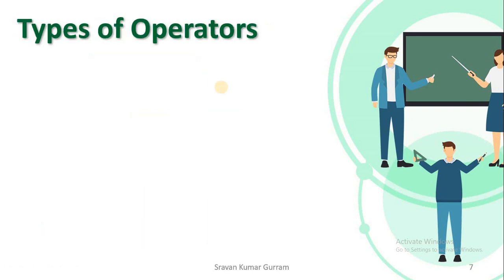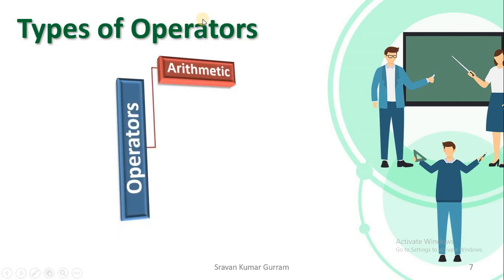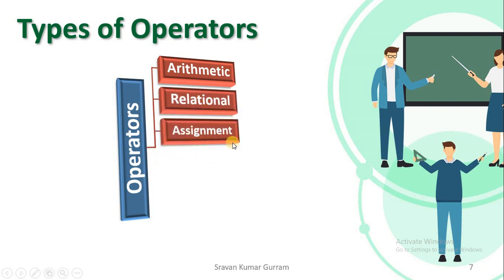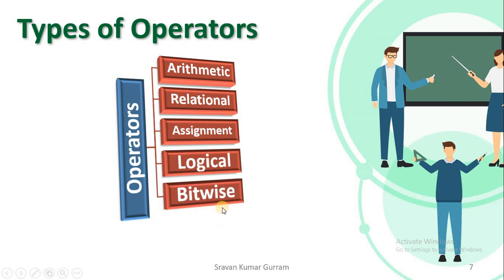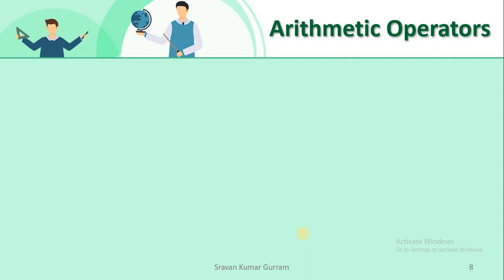Now let us see the different types of operators in Python: arithmetic operators, relational operators or comparison operators, assignment operators, logical operators, bitwise operators, and special operators. In the special operators, we discuss identity operators and others. Let us start our discussion with the first type — arithmetic operators.